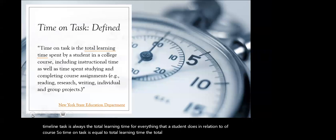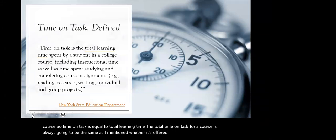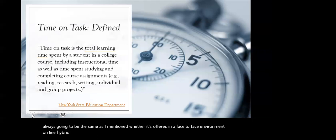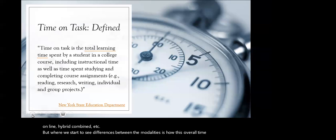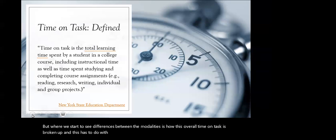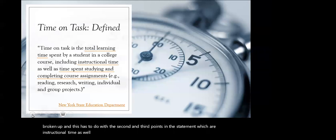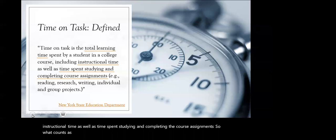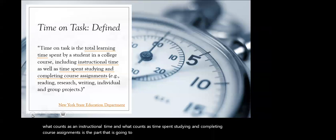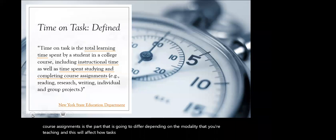The total time on task for a course is always going to be the same whether it's offered in a face-to-face environment, online, hybrid, combined, etc. Where we start to see differences between the modalities is how this overall time on task is broken up. This has to do with instructional time as well as time spent studying and completing course assignments — what counts as each will differ depending on the modality you're teaching in, and this will affect how tasks are distributed to meet the overall time on task.